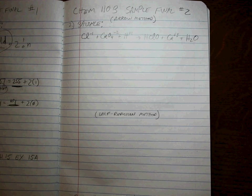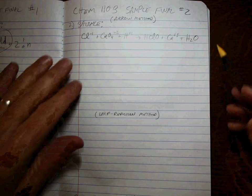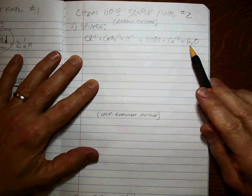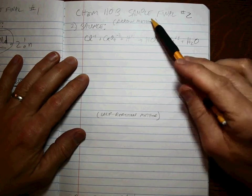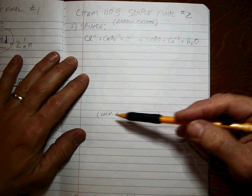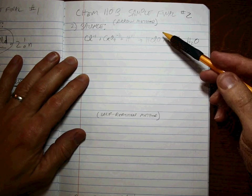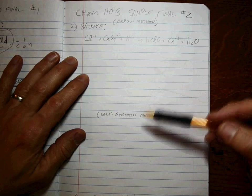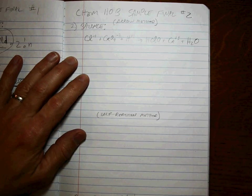Alright, here we go. Chem 110b sample final number two. We have to balance this redox reaction. I'm going to show you both the arrow method and the half-reaction method. If you like the arrow method, watch the first and then skip the half-reaction. If you like the half-reaction, skip over the arrow and just watch this.